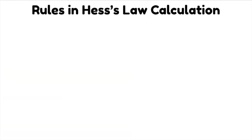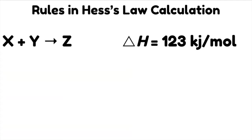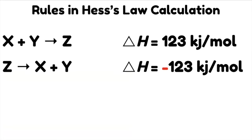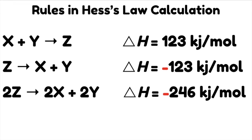In calculating with Hess's law there are certain rules to follow. First, if a reaction has a specific ΔH, the reverse of the reaction will have the same ΔH but with opposite sign — so from X + Y → Z with +123 kJ/mol, the reverse Z → X + Y is −123 kJ/mol. Second, if you multiply the molar quantity by a number, you must also multiply the ΔH by the same number. For example, multiplying by two doubles the ΔH as well.